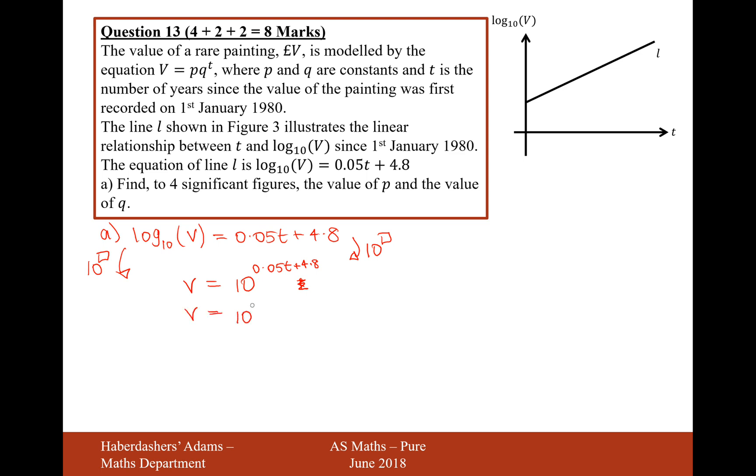Let's now use a rule of indices to split up this indice into two separate indices, both with a base of 10, but now we've got them multiplying together. That's the rule of indices. If you're multiplying indices together, you add the powers. We've just done that rule in reverse.